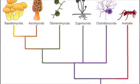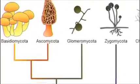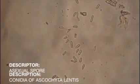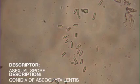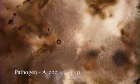Ascochyta leaf blight is a common foliar disease caused by the fungi Ascochyta, belonging to the phylum Ascomycota. This fungus can infect crops such as lentil, faba bean, chickpea, field pea, cow pea, and green and dry beans.